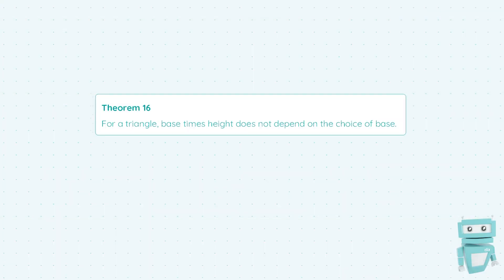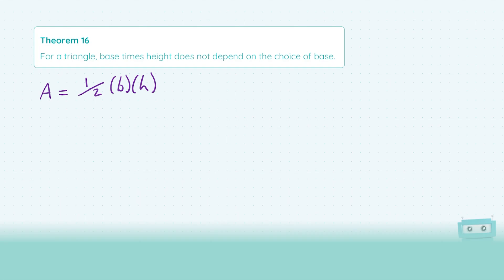Hi guys, Sean here from StudyClicks, and in this video we're going to be taking a look at Theorem 16. This theorem is in reference to the area for a triangle, which is a half times the base times the height. What it states is that for a triangle, base times height does not depend on the choice of base.